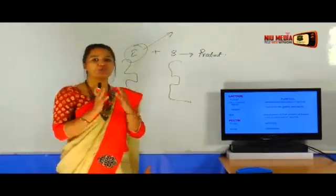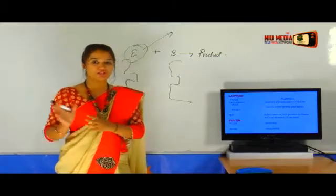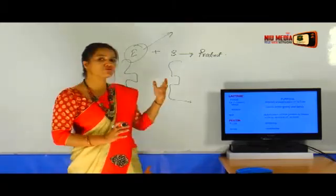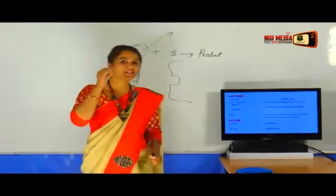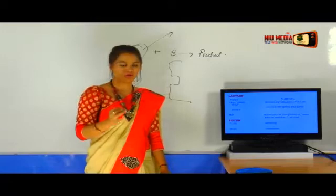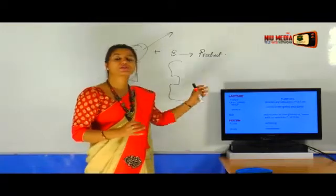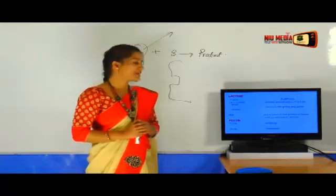We have pectin. Pectin is very common nowadays in food industries because it is used for the softening of the fruit and for the clarification of wines. That transparent look comes due to the presence of this enzyme pectin.